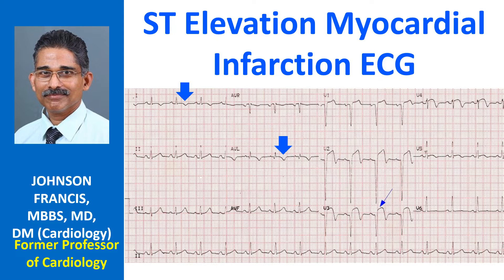QS complexes are seen from V1 to V3. Rounded negative P waves in V1 would suggest associated left ventricular dysfunction causing left ventricular overload.